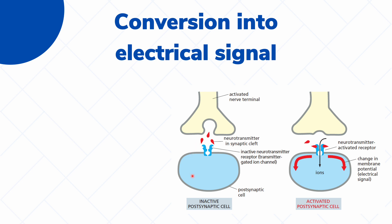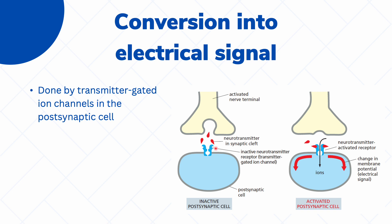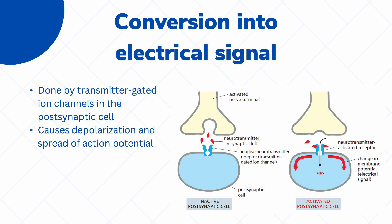On the opposite side of the cleft, the postsynaptic cell contains neurotransmitter receptors — proteins whose job it is to detect these different neurotransmitters. These proteins are also, in and of themselves, transmitter-gated ion channels. When they detect the neurotransmitter, they open and allow the entry of different ions, causing depolarization and a spread of action potential. So our neurons convert an electrical signal from the presynaptic cell into a chemical signal transmitted in the synaptic cleft, and that chemical signal is then detected by the postsynaptic cell, which converts it back into an electrical signal.